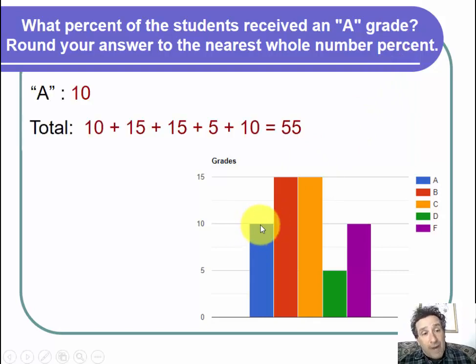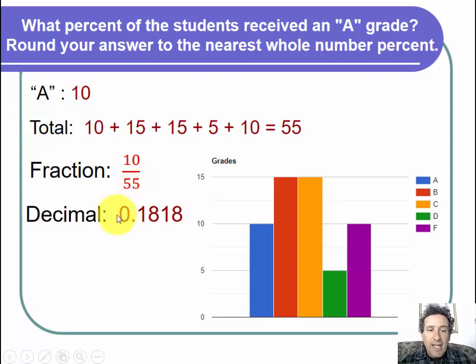And then we remind ourselves that the total was 55, same as the other two. The graph hasn't changed, so it will be the same total. So the fraction of A's over the total is just 10 over 55. To write it as a percent, we first convert it to a decimal. And I use my calculator. I took 10 divided by 55 and I got 0.1818.